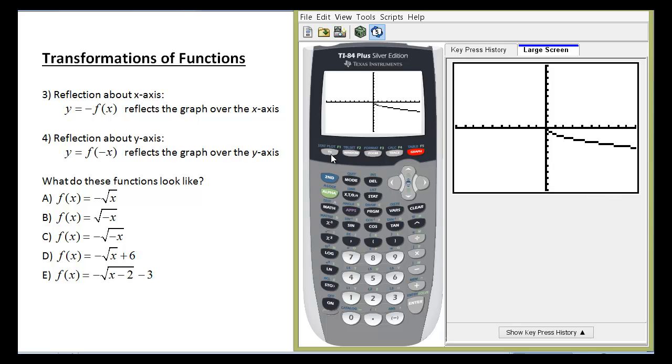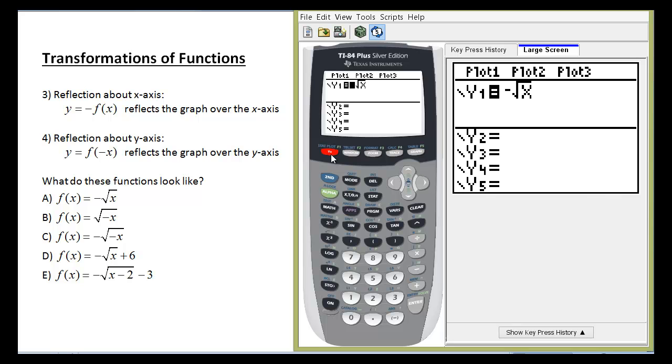We could do the same thing with x squared, but if I'm about to do a y-axis reflection, you'll see that it's hard to see what a quadratic function looks like reflected over the y-axis because it looks exactly like itself. That's why I'm playing around with the square root of x.